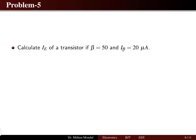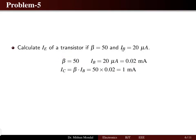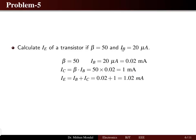Problem number five: determine the emitter current of the transistor for beta equal to 50 and base current of 20 microamps. Converting to milliamps, that is 0.02 milliamps. The collector current equals beta times the base current, giving 1 milliamp. Using KCL, the emitter current equals base current plus collector current, which is 1.02 milliamps.